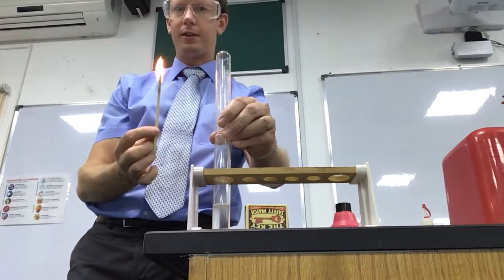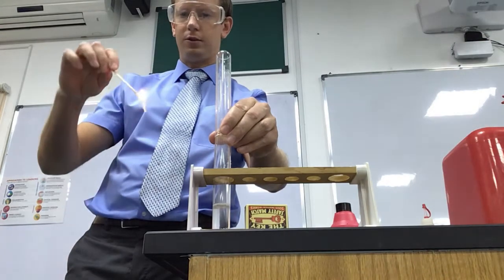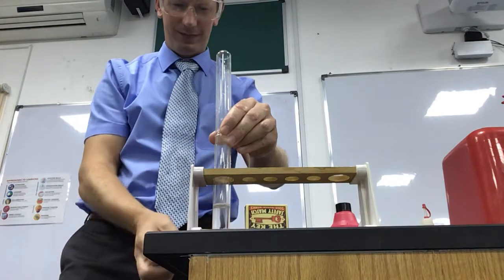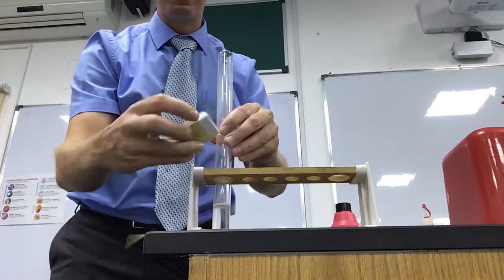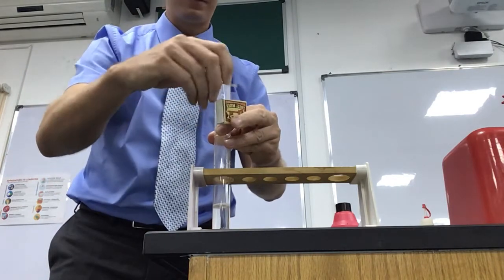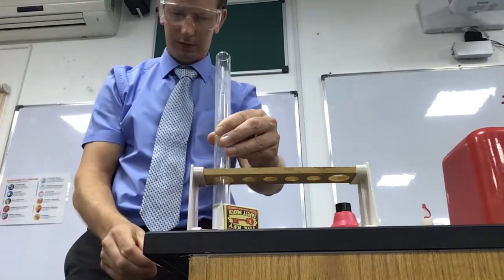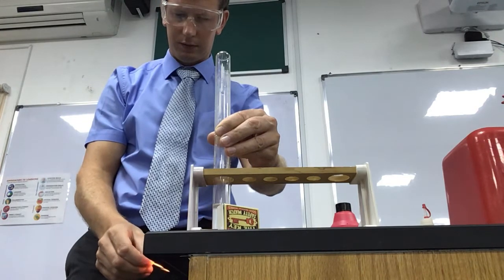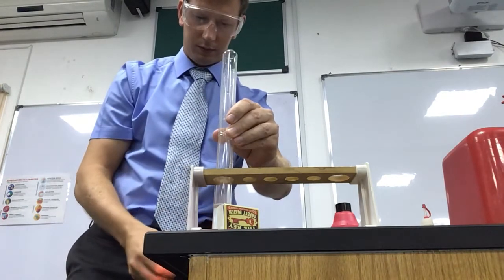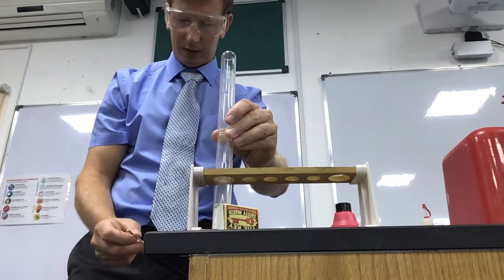If I hold the splint up like this it should get smaller. I don't want it to go out, so when it gets too small I'll tilt it up. It's still bubbling away, so I'm happy it's still working.